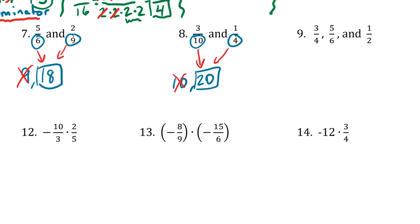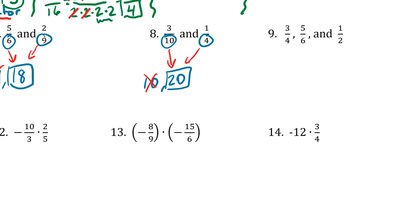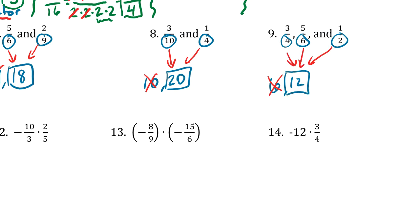One more: 3 fourths, 5 sixths, and 1 half. We're only looking at the denominators: 4, 6, and 2. Even though there are three numbers, the process doesn't change — we just check more numbers. Start with 6, the biggest. Does 4 go into 6? No — so it's not 6. Then 6 plus 6 is 12. Does 4 go into 12? Yes, 3 times. Does 6 go into 12? Yes, 2 times. Does 2 go into 12? Yes, 6 times. So 12 is our LCD.